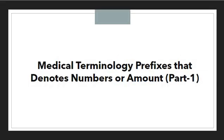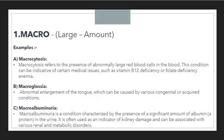For today we are going to discuss those terminology prefixes that denote number or amount. As mentioned in the previous session, there are three or sometimes four parts in a medical term: prefix, root word, suffix, and sometimes a combining word. In this session we are going to discuss only the prefixes that denote number or amount.